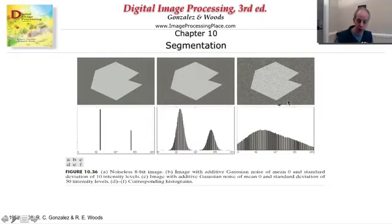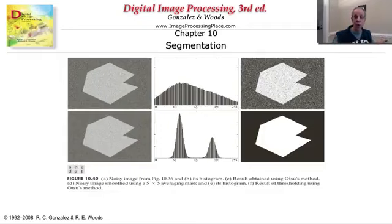It's going to find the threshold. Now, if we add much more noise, the variance is about five times going from here to here. Now the histogram is much more distributed. We don't have this multimodality. And Otsu is not going to, Otsu's method is not going to be able to find a nice threshold.